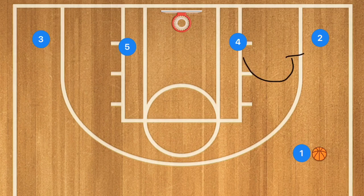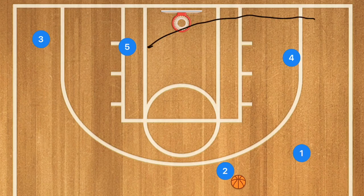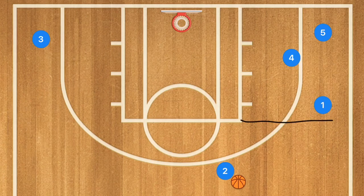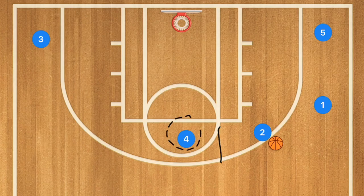So in this first play, player four is going to set a screen for player two, and player two is going to pop up towards the point. Player one will pass to player two. Now player five cuts across and player one goes into that corner, roughly at the free throw line extended. At this point, player four pops up and sets a screen for player two, then rolls towards the free throw line.